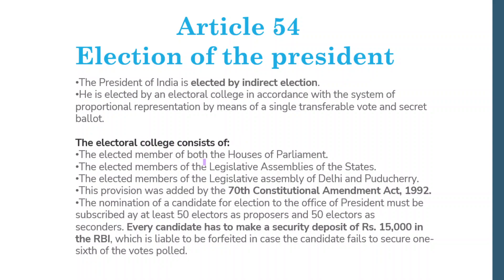The Electoral College consists of elected members of both Houses of Parliament, elected members of the Legislative Assemblies of the states, and the elected members of the Legislative Assemblies of Delhi and Puducherry — a provision added by the 70th Constitutional Amendment Act, 1992. The nomination of a candidate must be subscribed by at least 50 electors as proposers and 50 electors as seconders. Every candidate must make a security deposit of Rs 15,000 in the RBI, which is liable to be forfeited if the candidate fails to secure one-sixth of the votes polled.